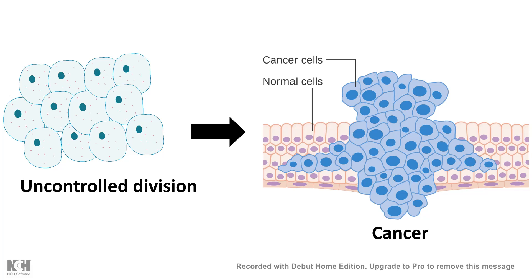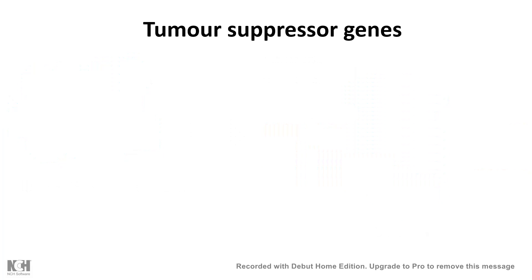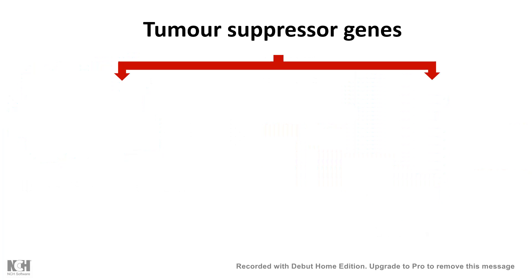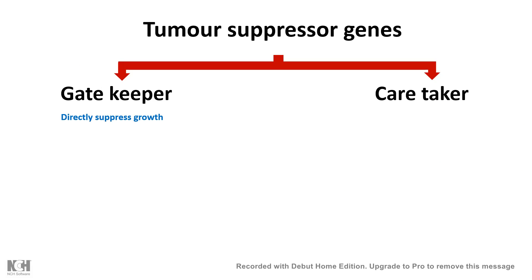Tumor suppressors, as the name suggests, suppress the formation of tumors. Tumor suppressor genes fall under two broad categories: one are called gatekeepers and another category is known as caretakers. Gatekeepers are those tumor suppressor genes, or products of those genes, which directly suppress growth. Caretakers overall maintain genetic stability, reducing the chance of mutation if they are functioning properly.